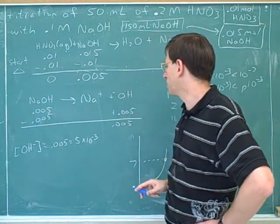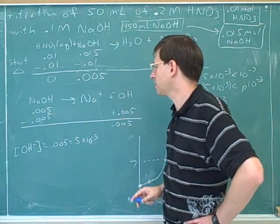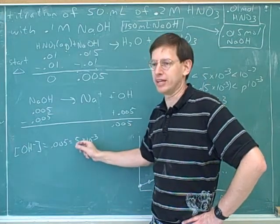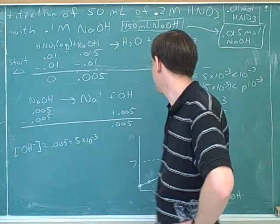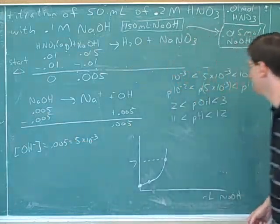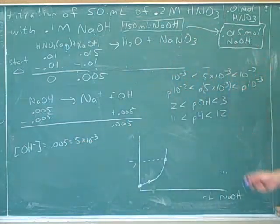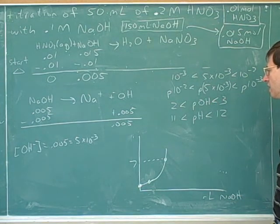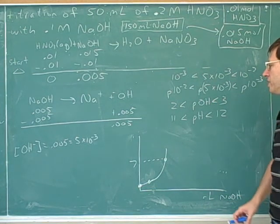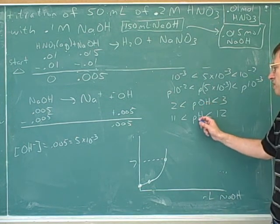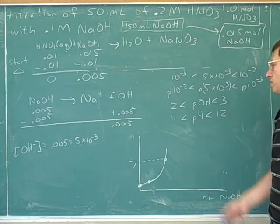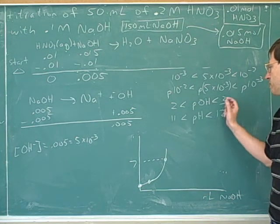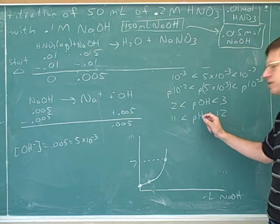This was important because that showed you that you weren't calculating initially the pH — you were calculating the pOH. So this gave us the hydroxide: 5 times 10 to the negative 3. Then we used the same process as before. So the pOH is between 2 and 3. We know the pOH plus the pH adds up to 14. So 2 plus 12 is 14, and 3 plus 11 is 14.